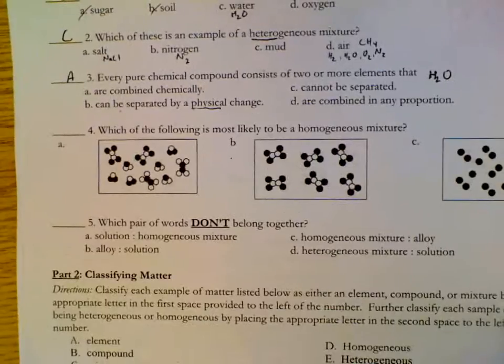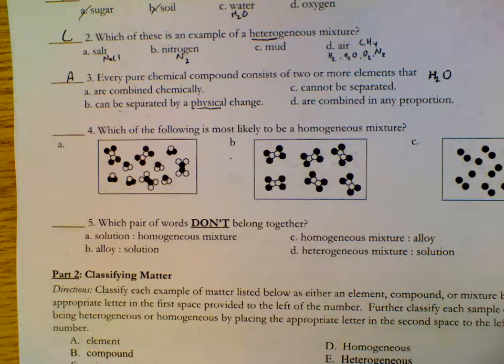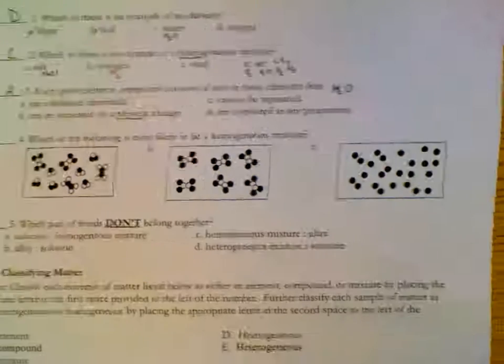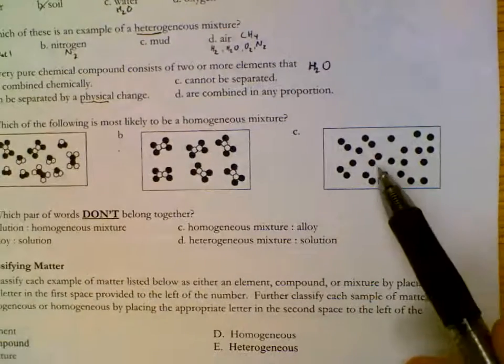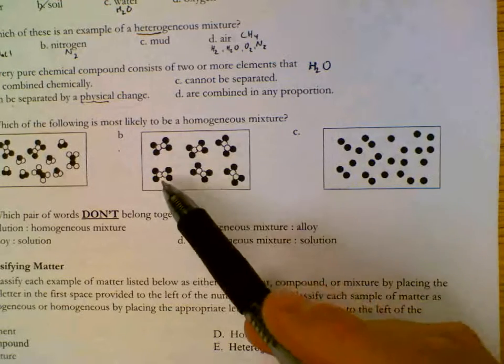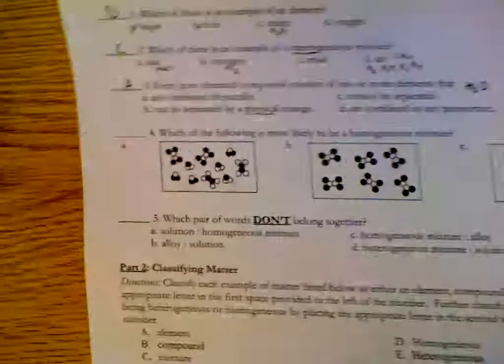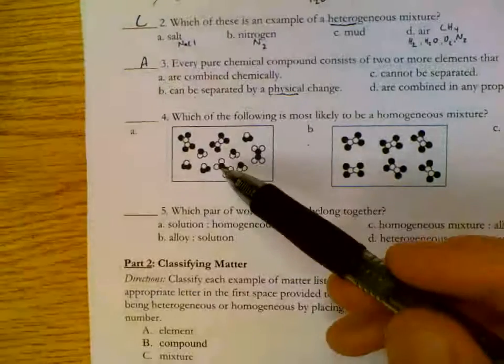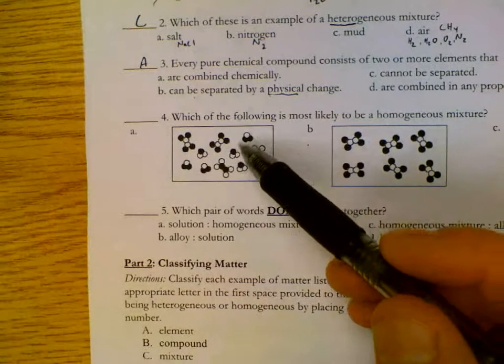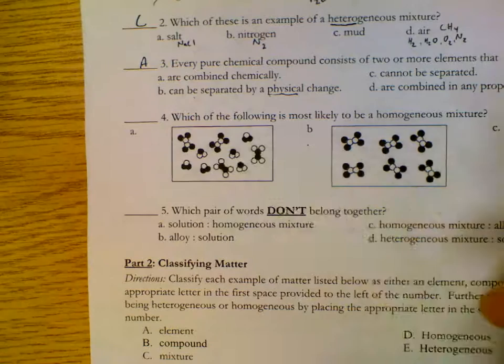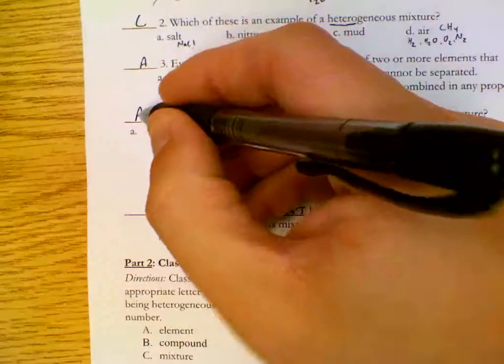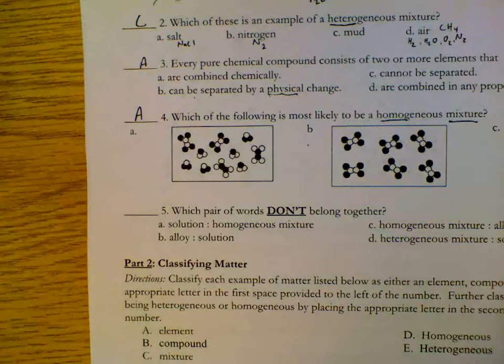Which of the families most likely would be a homogeneous mixture? C only has one type of dot, so that can't be a mixture at all. This only has one type of particle. A, hopefully, has multiple kinds of particles, and they seem to be pretty spread evenly, so that would be A, homogeneous, since you want that to be a mixture.